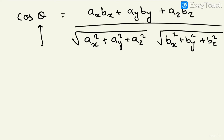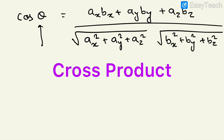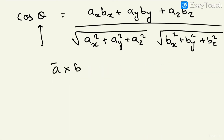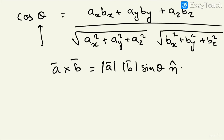This simple dot product gives you a very important result. Now someone might ask: why can't we use the cross product method? Remember, A cross B equals modulus of A times modulus of B times sin theta, but this is a vector equation — both sides are vectors, and n-cap is perpendicular to both A and B.